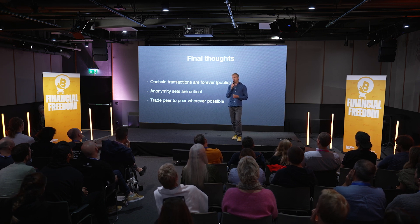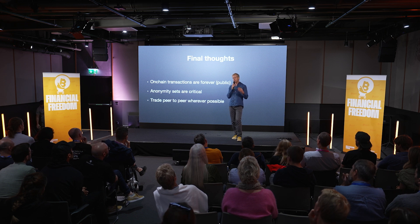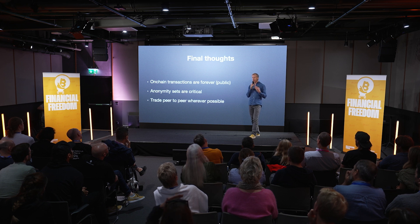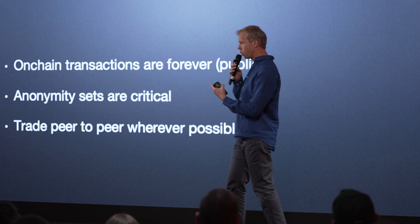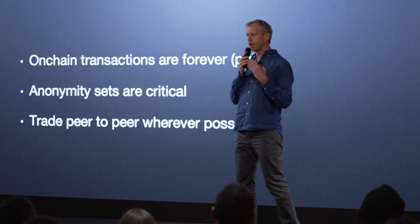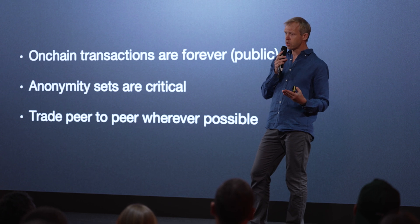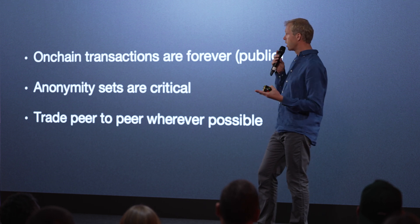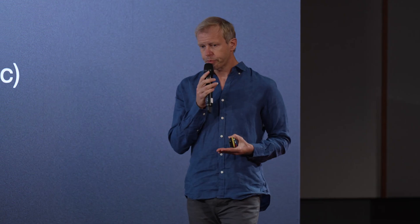Some final thoughts: always consider that every on-chain transaction you make is on the chain forever and will always be seen, so think ahead. I like to have multiple wallets and always consider every transaction I make. When adopting a new privacy technique, consider what anonymity set you're getting — a new technique or implementation may not provide as large an anonymity set as you'd want. Finally, as I said at the start, all blockchain analysis must start with tying real-world identities to addresses, so every time we can avoid putting our real-world identities into databases, we can transact more privately on-chain.